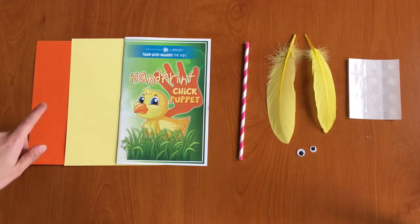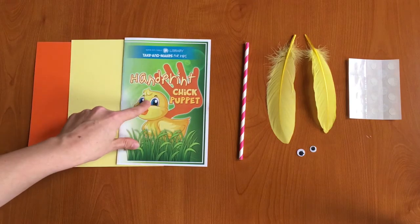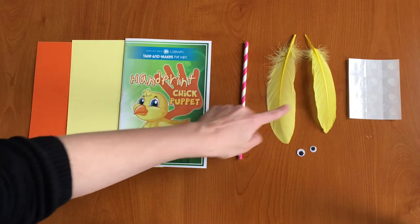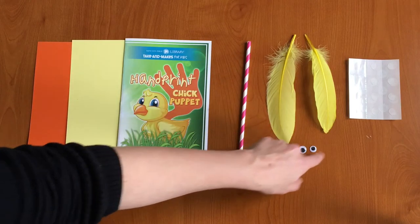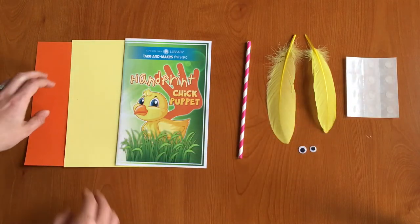In your Take and Make kit you should have an orange piece of paper, a yellow piece of paper, your instructions, a paper straw, two yellow feathers, two googly eyes, and a sheet of glue dots. Let's get started.